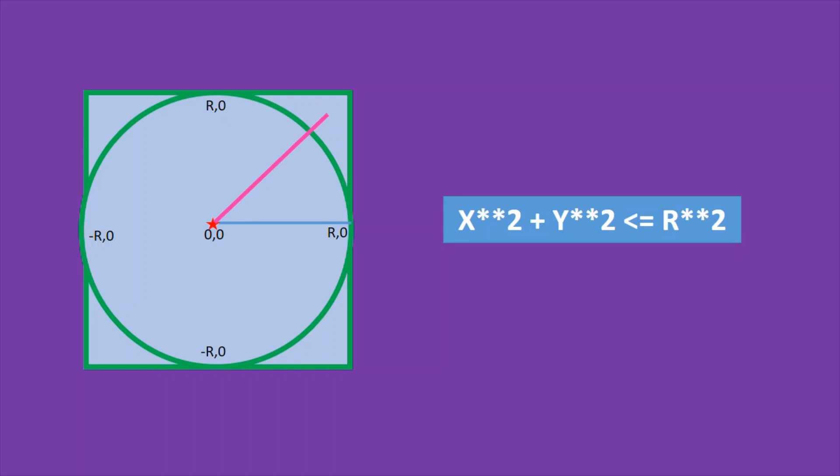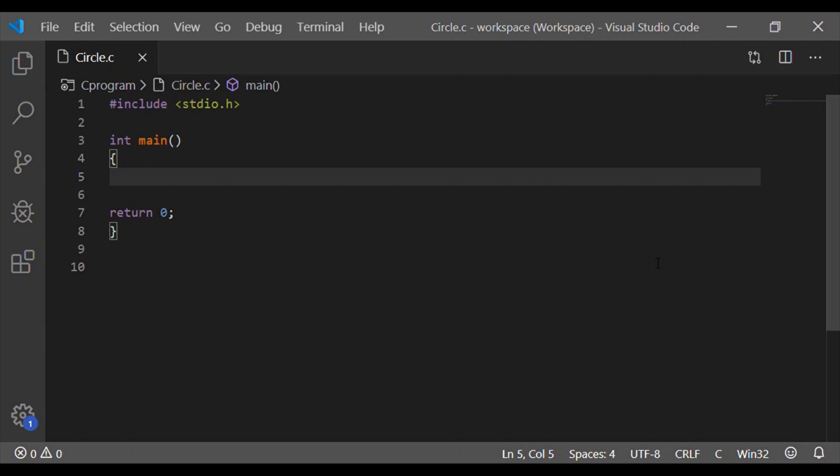Now with this perspective we will proceed to implement in our C code. Let us implement this algorithm to draw the circle with filled-in star pattern in C program without using graphics.